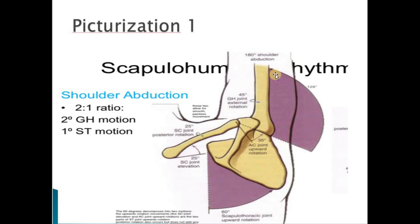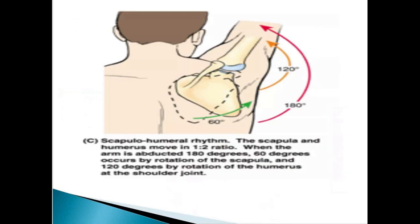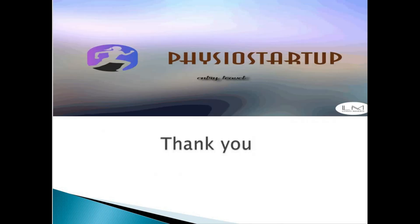Next, we will see the picturization. The 2:1 ratio means two degrees of glenohumeral motion to one degree of scapular elevation. Note that up to 90 degrees it is pure glenohumeral joint movement; beyond 90 to 120 degrees, the scapula and scapulothoracic joint come into action. Here is another picturization for you. Thank you — by Physio Startup.